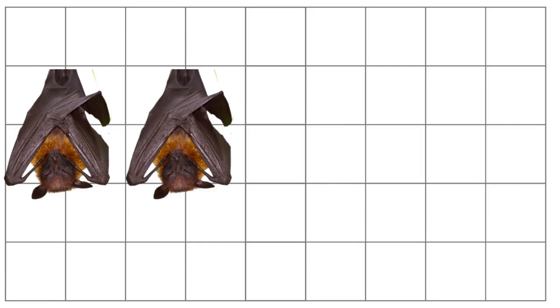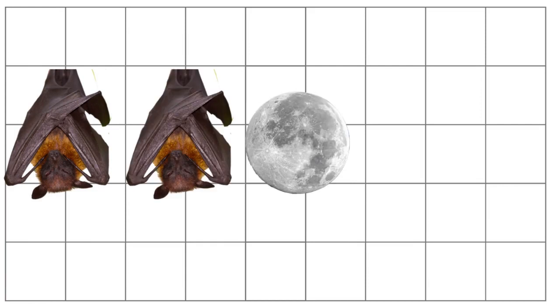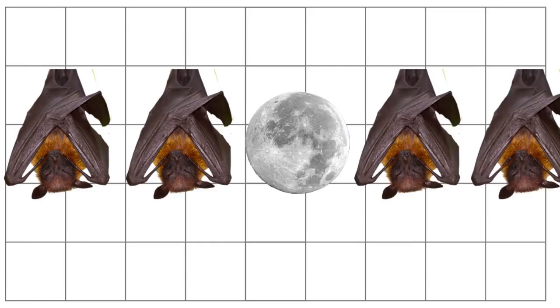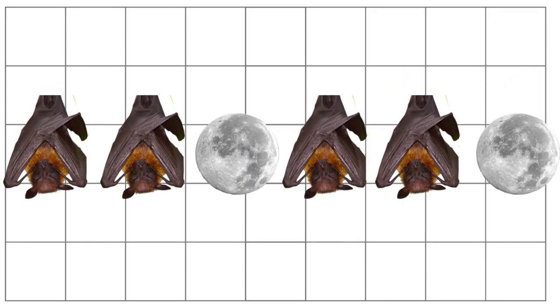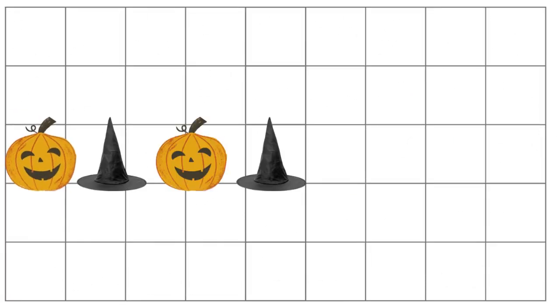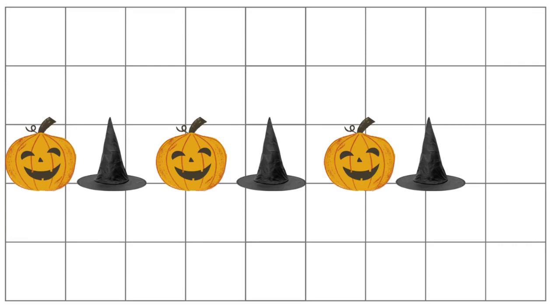Bat, bat, moon. Bat, bat. What comes next? Pumpkin, hat. Pumpkin, hat. Pumpkin, hat. What comes next? Pumpkin.